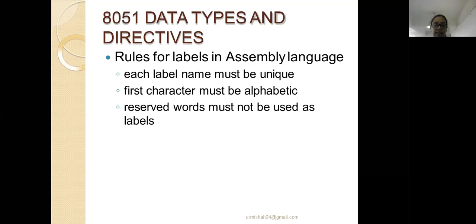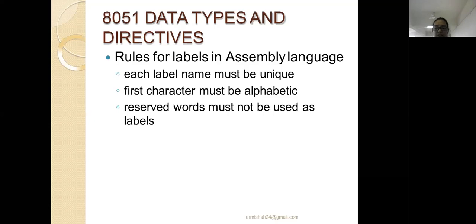The rules for labels in assembly programs are: each label name must be unique, the first character must be an alphabet, and reserved words must not be used as labels. For example, you cannot use ADD as a label name because it is already stored as an instruction mnemonic in 8051 memory. You can use names like ADD1, LOOP1, or LOOP2 — any name not present in the 8051 instruction set mnemonics.